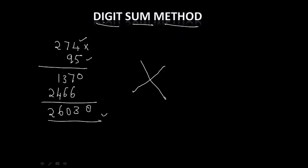So we take the multiplicand that is 2 plus 7 plus 4. So that is equal to 13. This is a double digit number. Therefore you re-add again until you get a single digit number. So that is 4.